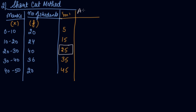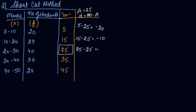With assumed mean A = 25, find the deviation m minus A for each mid-value: 5 − 25 = −20, 15 − 25 = −10, 25 − 25 = 0, 35 − 25 = 10, and 45 − 25 = 20. So the deviations are −20, −10, 0, 10, and 20.